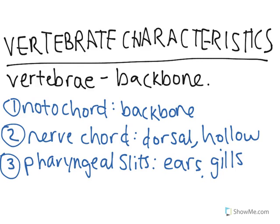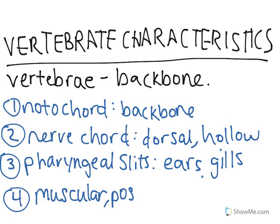The fourth and last vertebrate characteristic that distinguishes vertebrates from invertebrates is a muscular post-anal tail. You may be thinking humans don't have a tail, but we actually do have a tail that's basically repressed. We still have the tailbone, but we just don't have an actual tail. Within fetal development, you still develop that bone that supports humans having a tail.